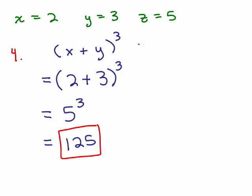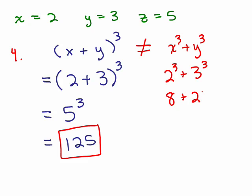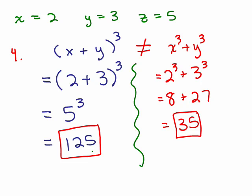Notice this is not the same thing as x cubed plus y cubed. Because if you had written x cubed plus y cubed — 2 cubed plus 3 cubed — you would get 8 plus 27, which is 35. So make sure you realize this is the correct result, and they're totally different. When you see 2 plus 3 in parentheses to the third power, do not write 2 cubed plus 3 cubed.